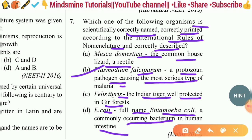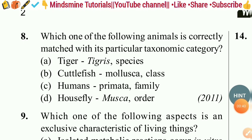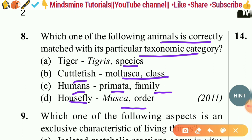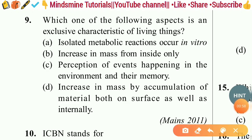Question eight: Which one of the following animals is correctly matched with its particular taxonomic category? Options: tiger — Tigris (species); cuttlefish — Mollusca (class); humans — Primata (family); house fly — Musca (order). The correct answer is option A — tiger: Tigris, species.